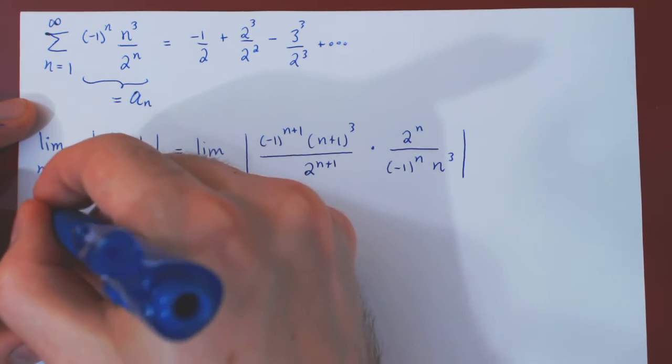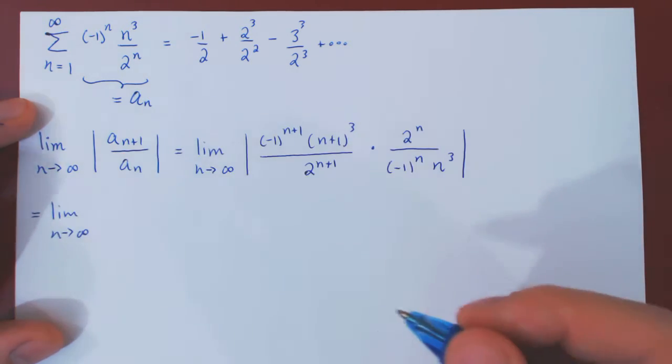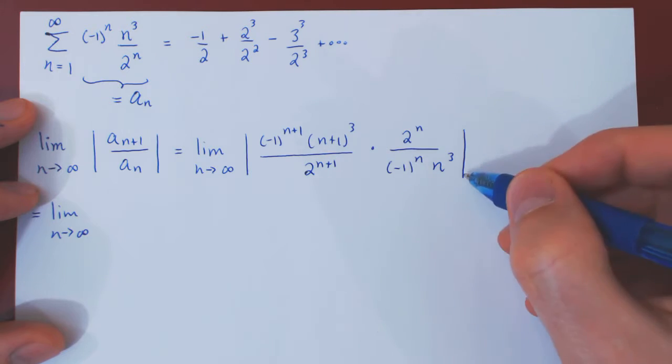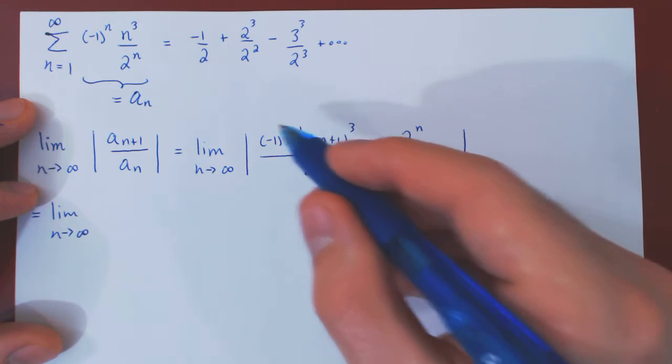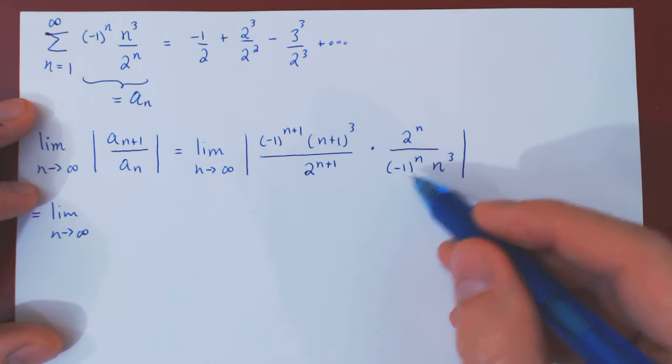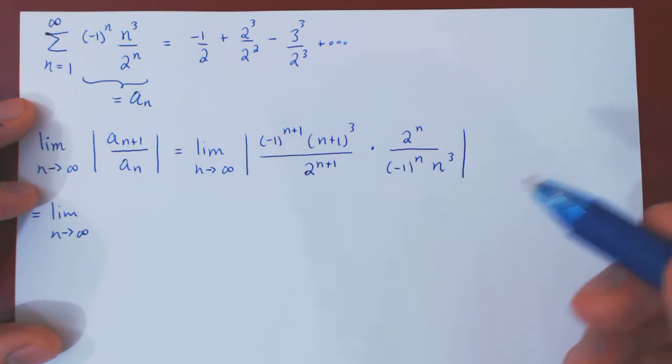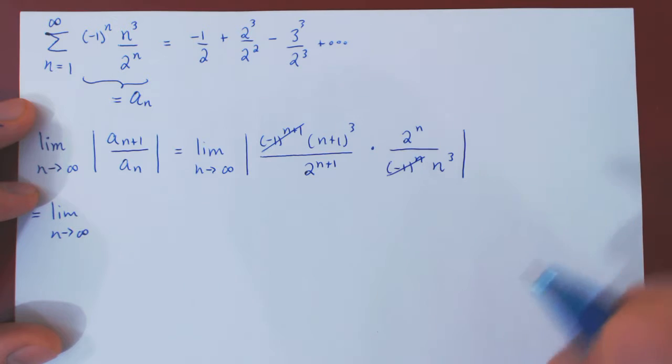Let's simplify this. Well, if you recall, the absolute value function all it does is it makes things positive. Well, look at these two terms here. Negative 1 to any power is either plus or minus 1, but in absolute value, plus or minus 1 is always 1, and so we can ignore these two terms.